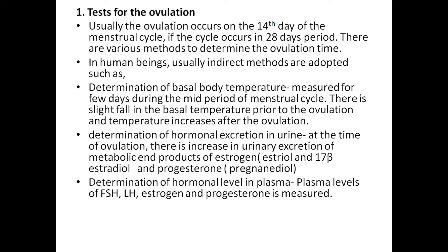First question is tests for ovulation. Usually ovulation occurs on the 14th day of the menstrual cycle, if the cycle occurs in a 28-day period. There are various methods to determine the ovulation timing. In human beings, indirect methods are adopted.